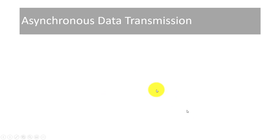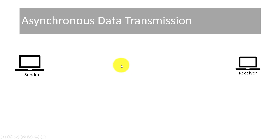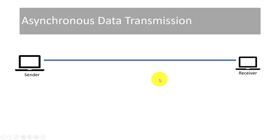First of all, we have a sender and a receiver, and we have a communication channel for them. The communication channel we can call it medium, or communication media. This is a wire or wireless medium.